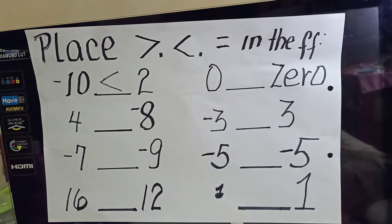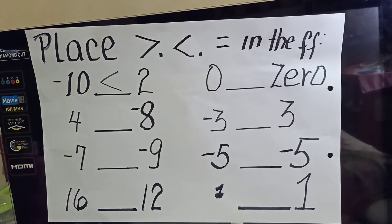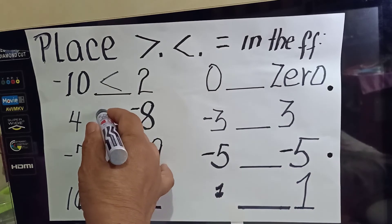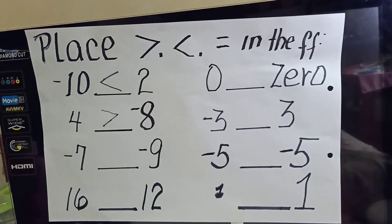Next, we have 4 and negative 8. We know very well that 8 is greater than 4, but we are not talking about 8 — it's negative 8. I'd like to remind you of our discussion: a positive number is always greater than a negative number. So the relation that exists is that 4 is greater than negative 8.